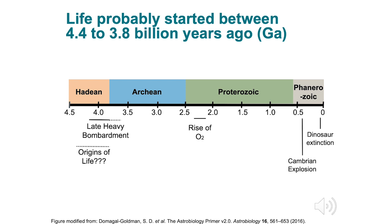Life probably started around 4.4 to 3.8 billion years ago. The origins of life is still a highly debated topic, so the range still covers billions of years. This is shown here in the timeline of Earth's history, from its formation about 4.5 billion years ago to the current times. There are four different eons of Earth known as the Hadean, Archean, Proterozoic, and Phanerozoic eons. These are all major time periods marked by drastic changes in the Earth's environment.